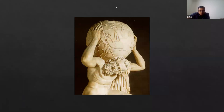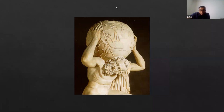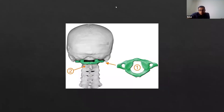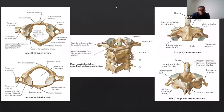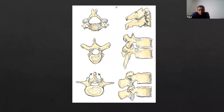C1 is called the Atlas — you can see it's supporting the weight of the head, like Atlas was supporting the world. C2 has a different shape; it has a little peg on it, and C1 actually rotates around that peg. A typical cervical, thoracic, and lumbar vertebra appear progressively larger. The lumbar vertebra is much bigger than a cervical or thoracic one. Note the vertebral body sizes in the front and the orientation of the facet joints, which change from cervical all the way down to lumbar.